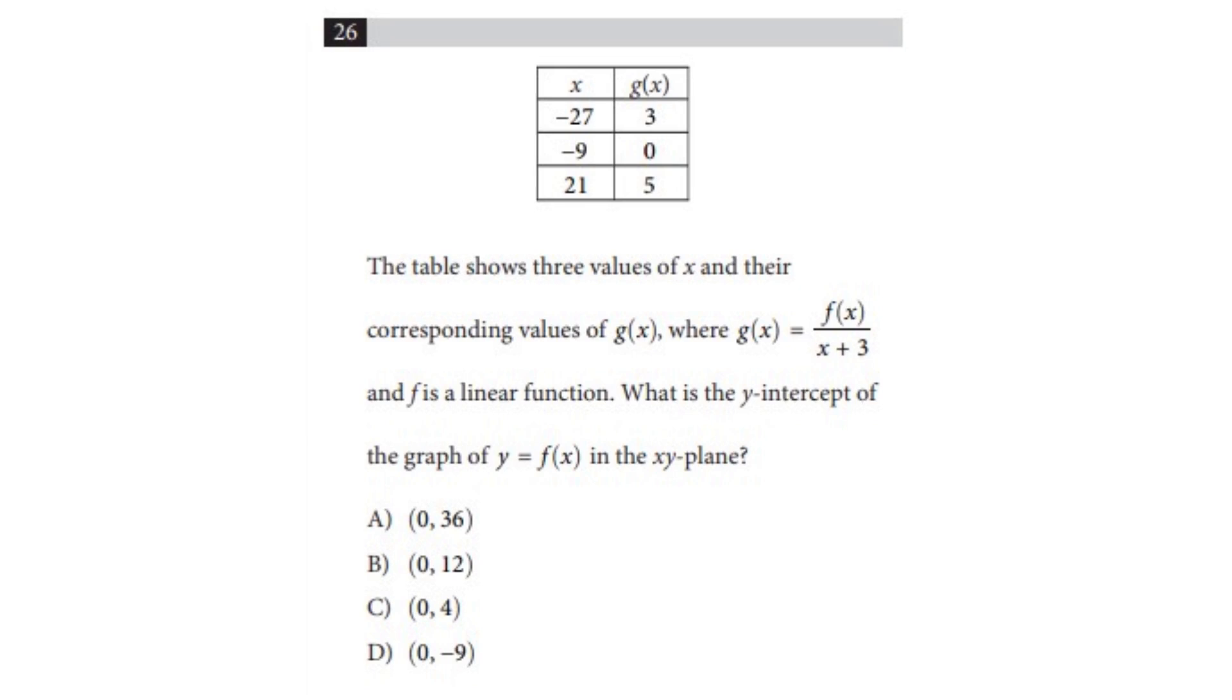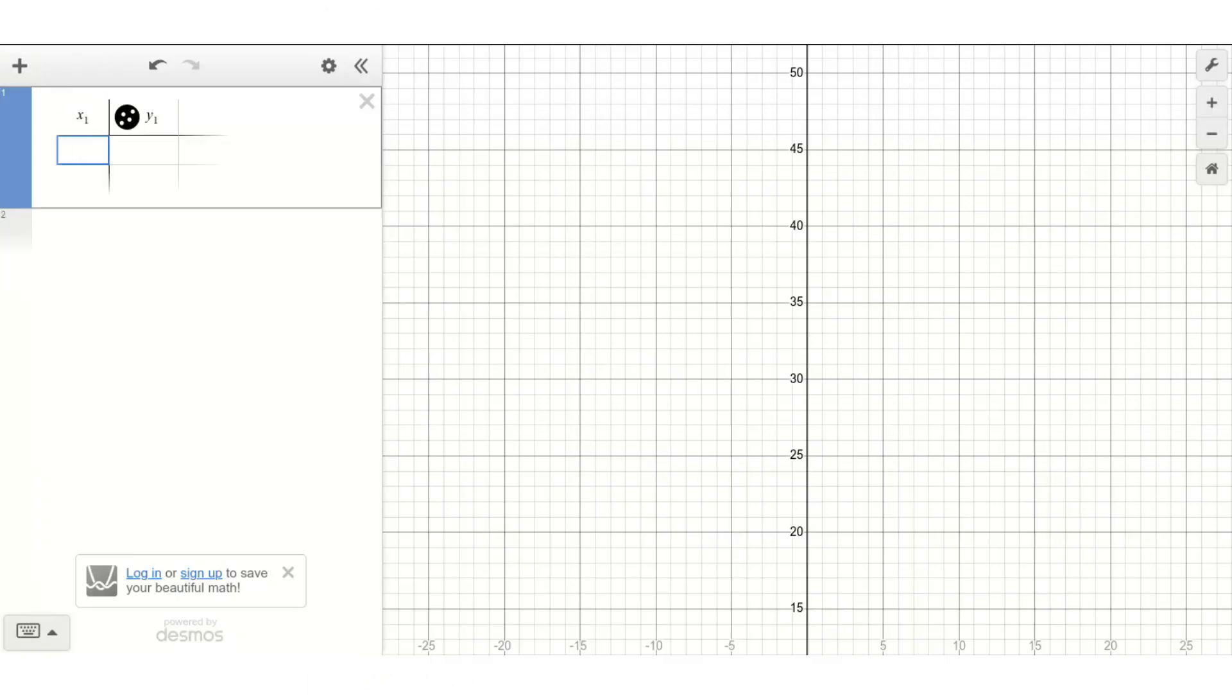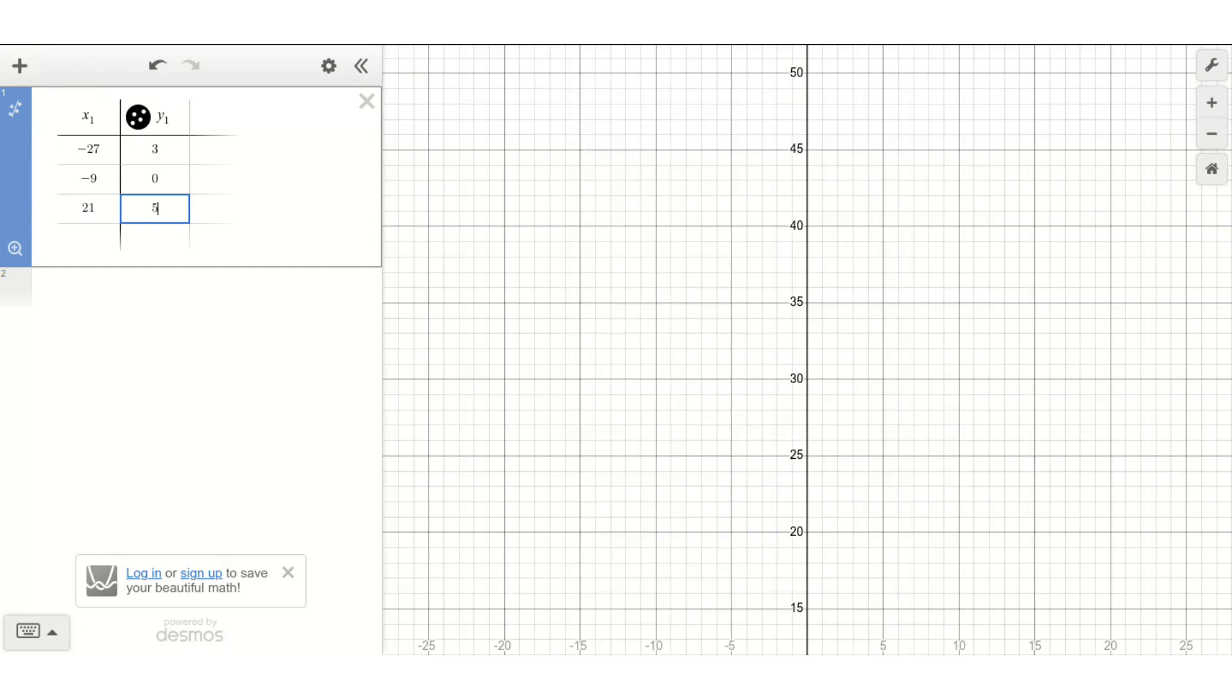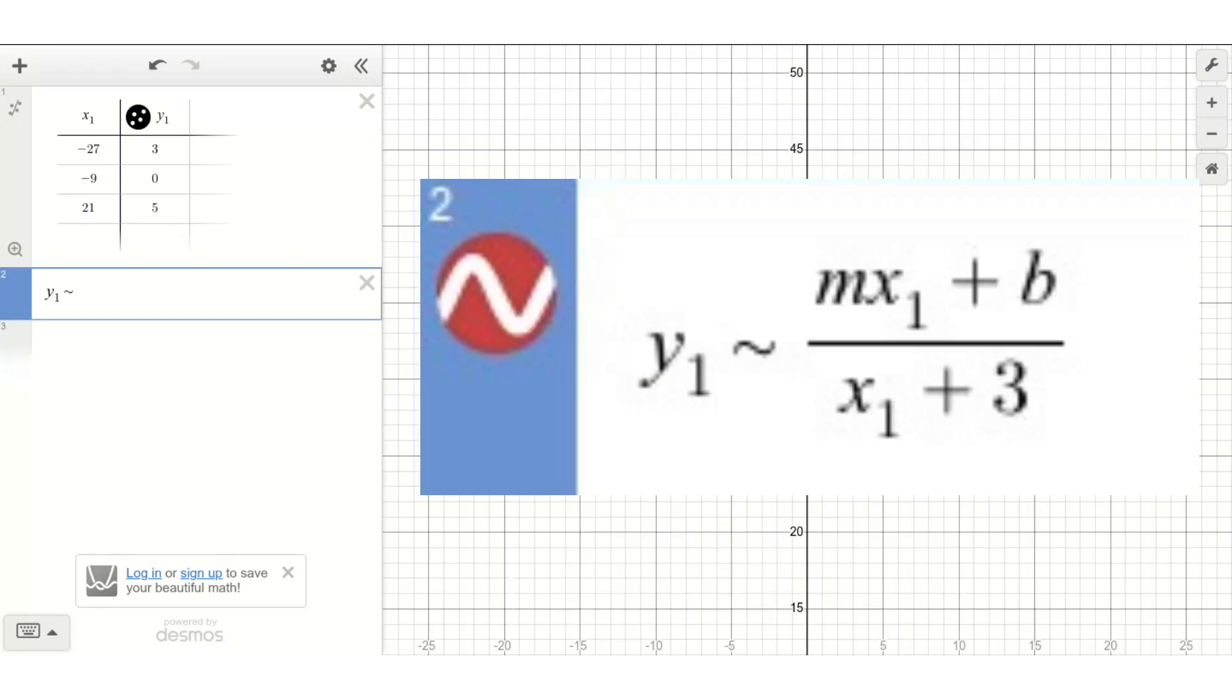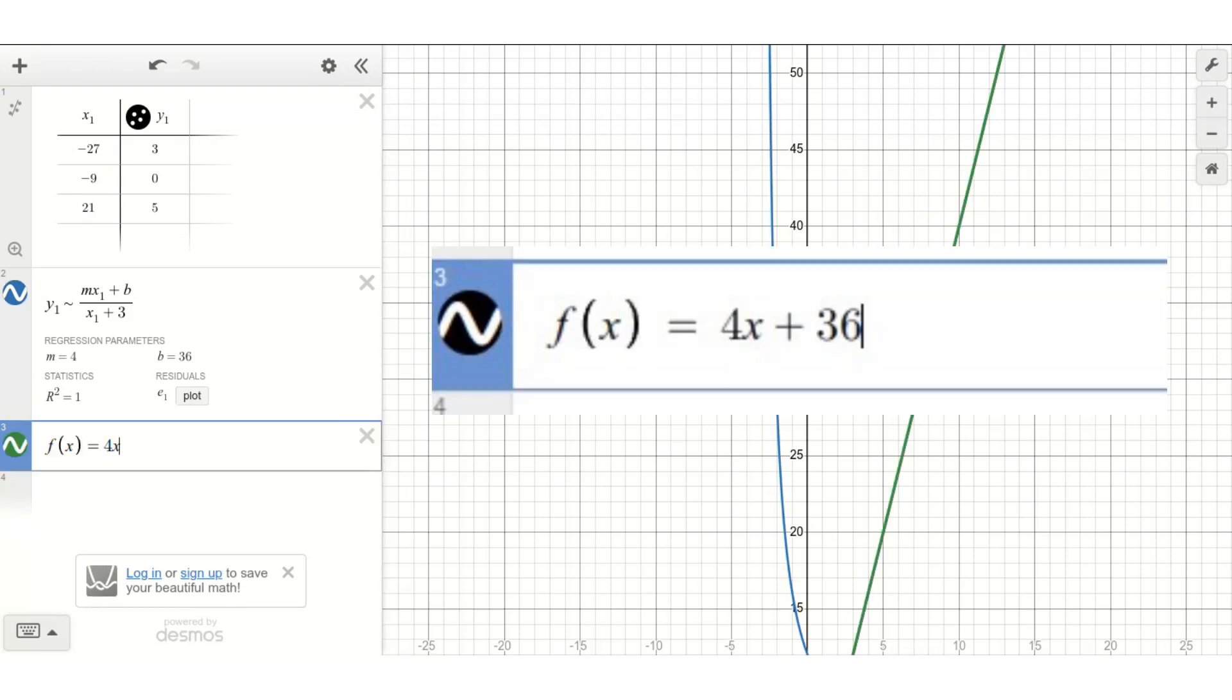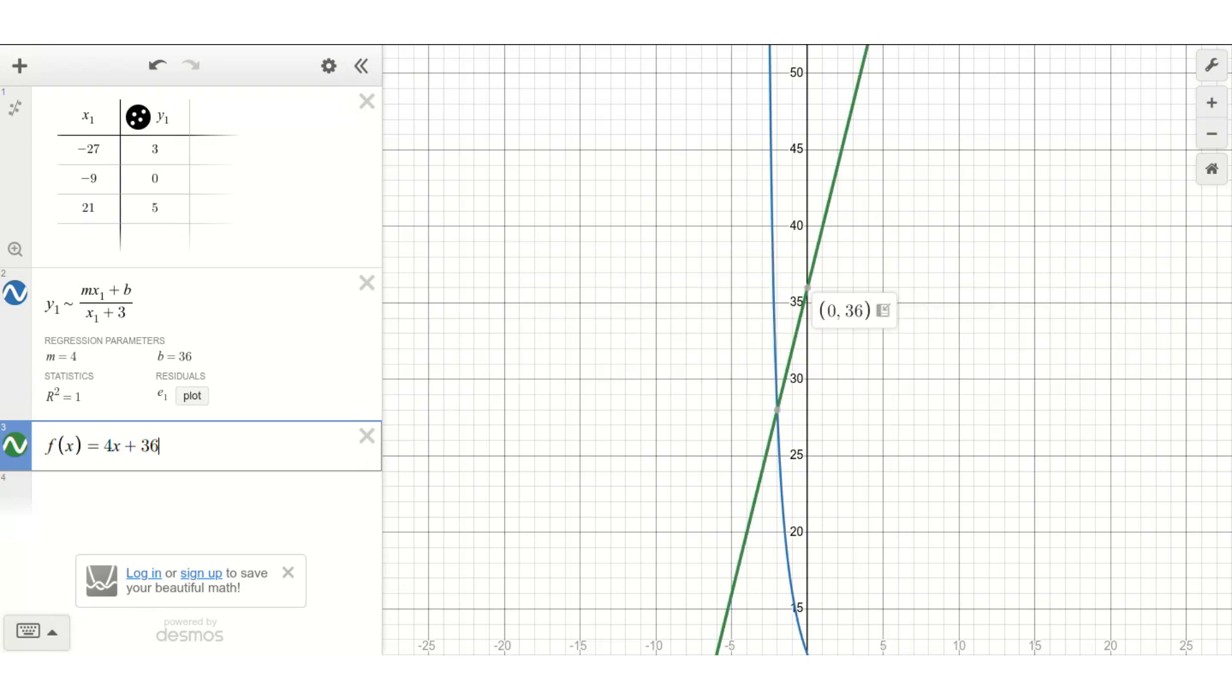The first step is to create a table in Desmos with all of our values given in the question. The x value should be labeled x1 and the y values or the outputs of g of x should be labeled y1. We then write the equation we know which is y1 tilde mx1 plus b divided by x1 plus 3. And the reason we use y1 and x1 for the different places of g of x and x is because then it'll use the values in the table to create a regression for the line. Desmos will eventually then spit out the values of m and b and this will give us the function f of x is 4x plus 36. We can then simply write this equation in Desmos to get the y-intercept 0 and 36.